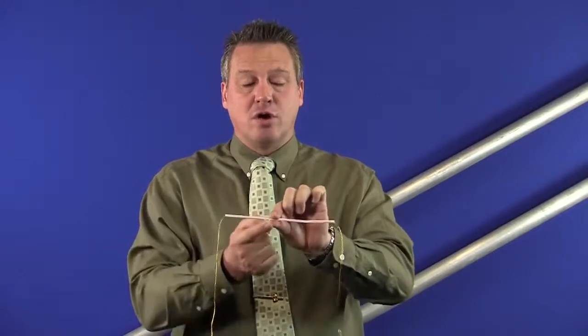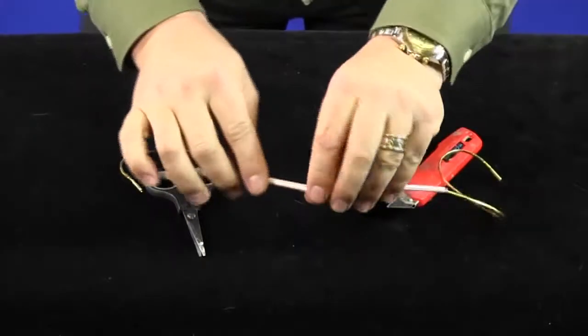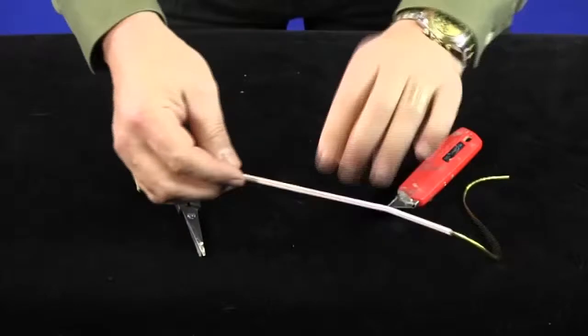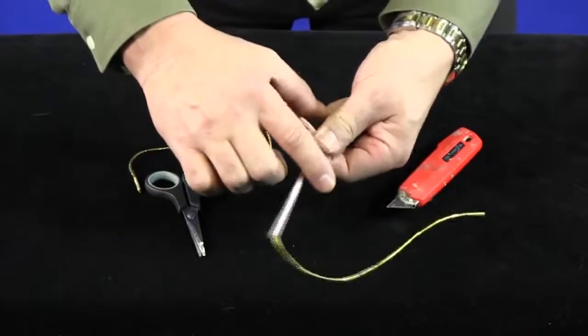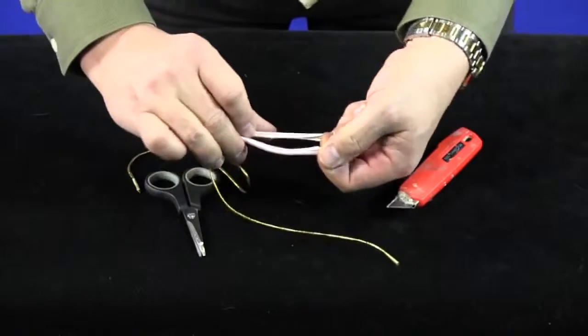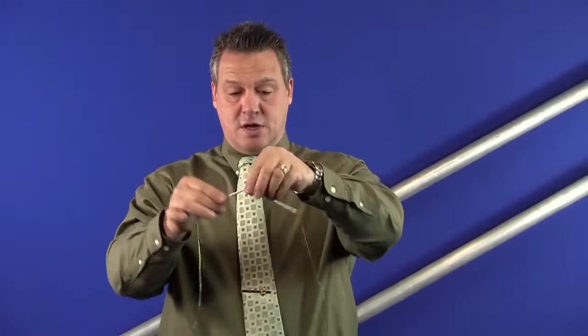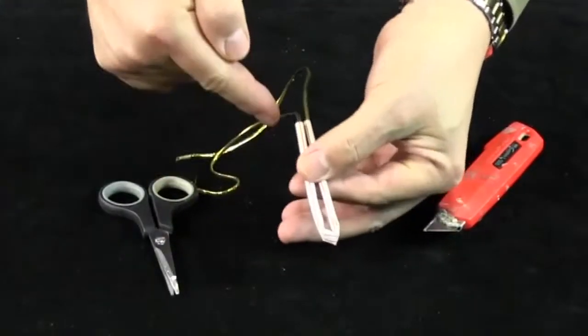When you fold the straw in half, you've got to keep your finger there so as you fold it that nothing comes out. So it's a case of keeping the forefinger or the thumb there and you just fold it like that, holding everything there in place. When you do it from far like this, no one really can see anything. And at the moment, the string is threaded right through there.